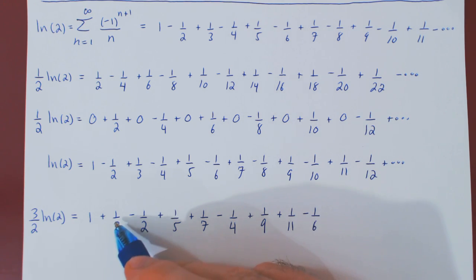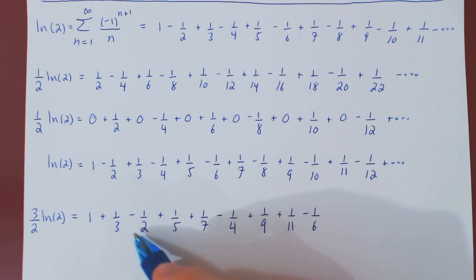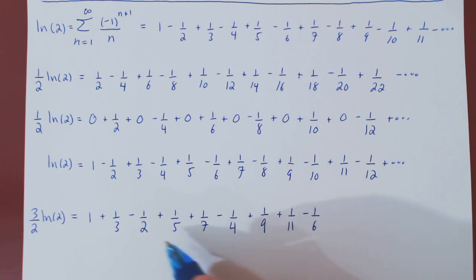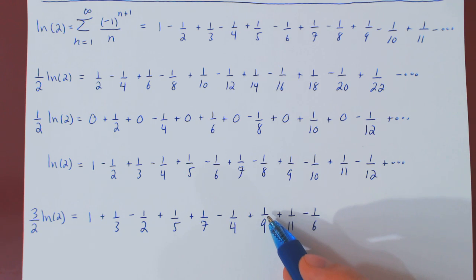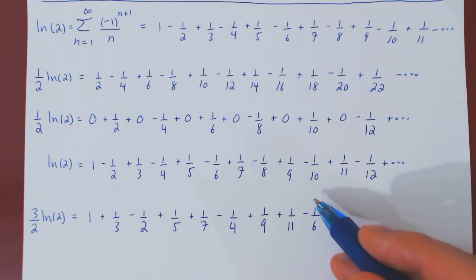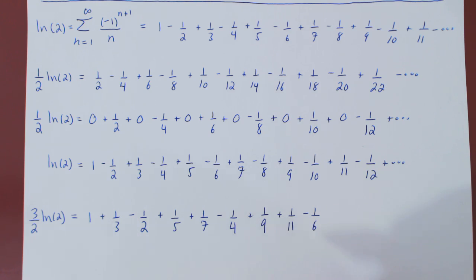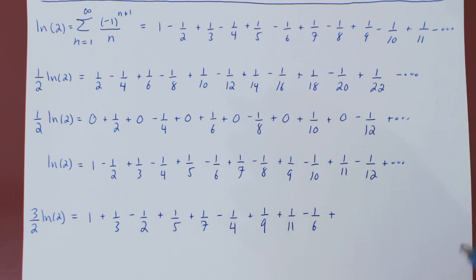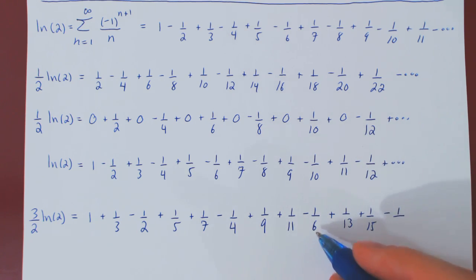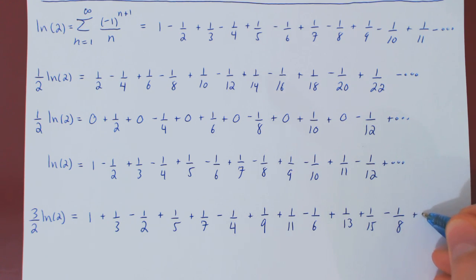Hopefully you can see the pattern: we add the reciprocals of the first two odd numbers, 1 and 3, then we add the negative of the first even number's reciprocal; then we add the reciprocals of the next two odd integers, 5 and 7, then the negative of the next even number's reciprocal, 4; then 9 and 11, then the next negative even term. The next three terms will be one-thirteenth plus one-fifteenth, then the negative of the next even number, one-eighth, and so forth.